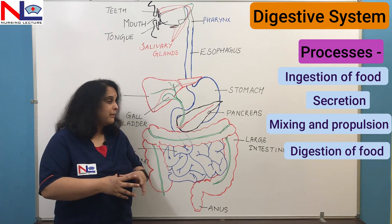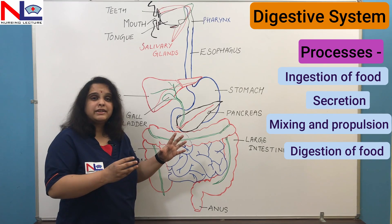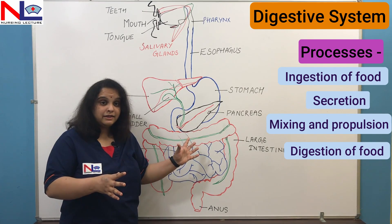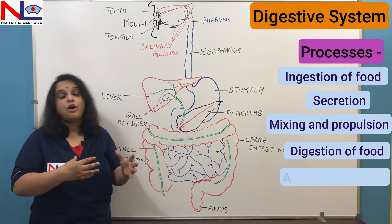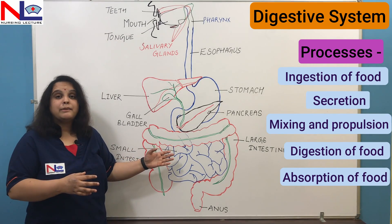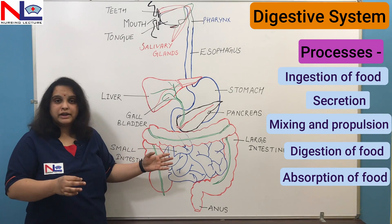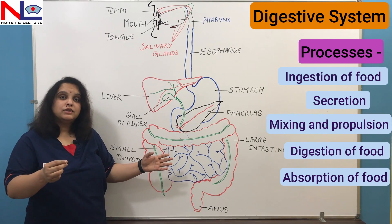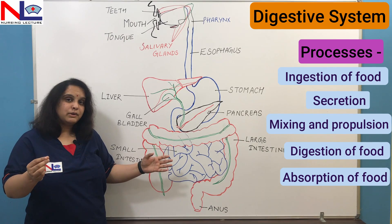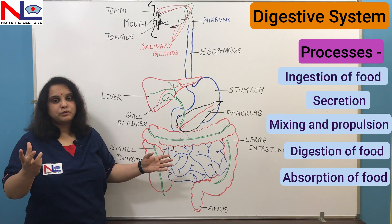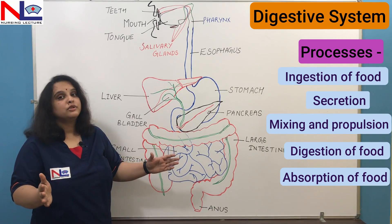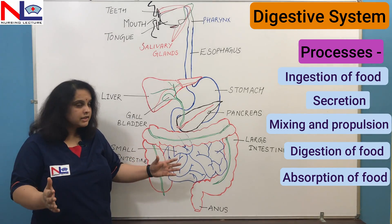After digestion, food enters the small intestine, which is mainly responsible for absorption of nutrients. The simpler components of all nutrients are absorbed here, entering the blood or lymph, and are transported to body cells. Absorption is therefore another important function of the digestive system.